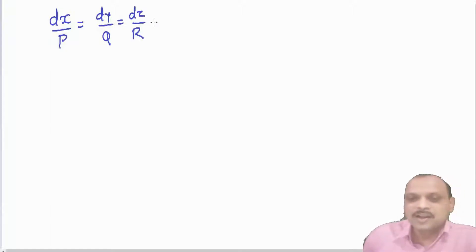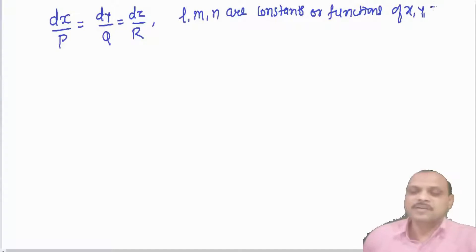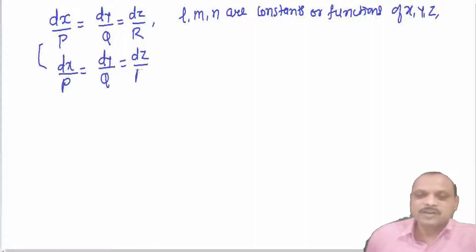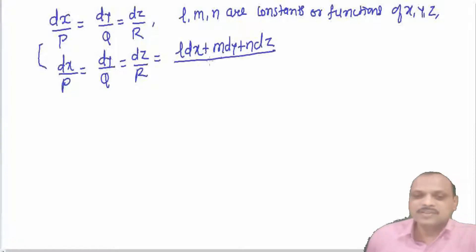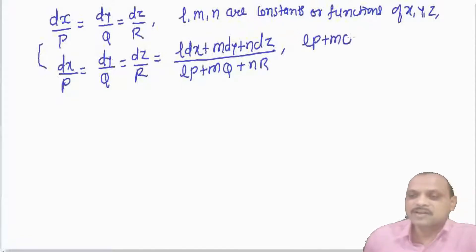Suppose l, m, and n are constants or functions of x, y, z. We choose l, m, n and multiply so that dx/P = dy/Q = dz/R = (l·dx + m·dy + n·dz) / (l·P + m·Q + n·R). Now, l, m, n are chosen so that l·P + m·Q + n·R = 0.